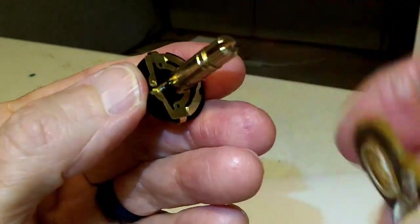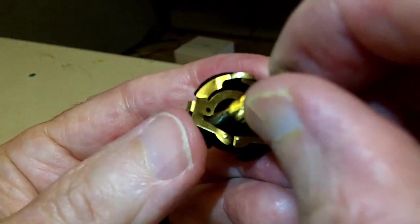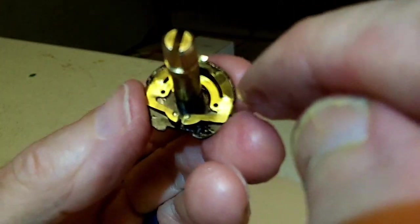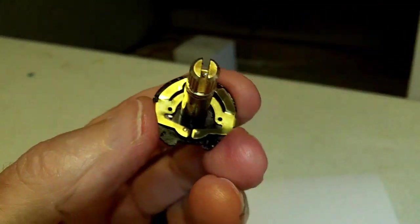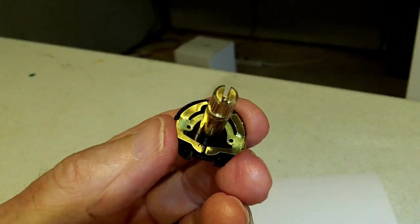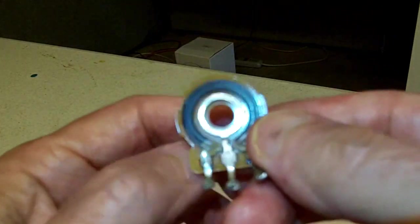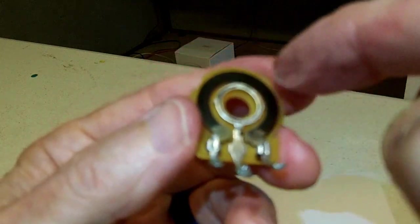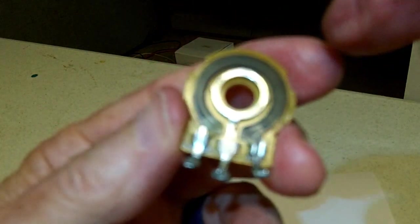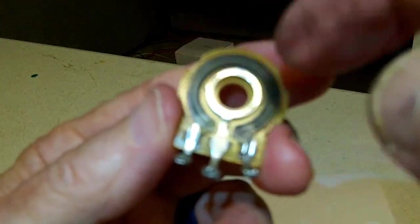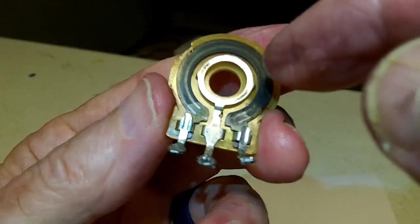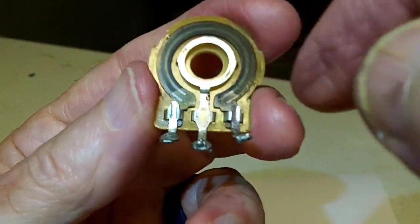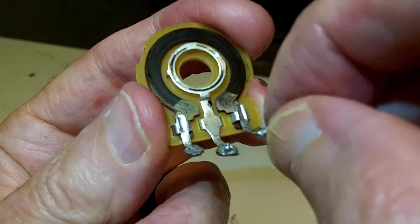We'll see how those are attached in a second. Here is the wiper assembly, and this is the resistive part that I was talking about. This is the part that sometimes gets dirty and then the wiper doesn't make good contact and it gets scratchy. By spraying a little contact cleaner in there, you can clean that up.